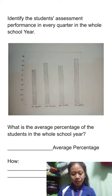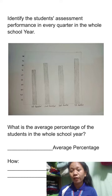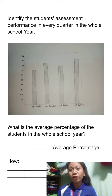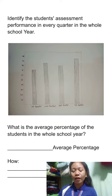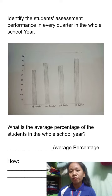First, as you can see, there is a graph, and my learning competency is to identify the student's assessment performance in every quarter in the whole school year. There is a first quarter, second quarter, third quarter, and fourth quarter. The question is: what is the average percentage of the student in the whole school year? You can identify the average of the student in every quarter and what percentage they got in each assessment. Below, there is also the average percentage and how you get the average percentage of the students.